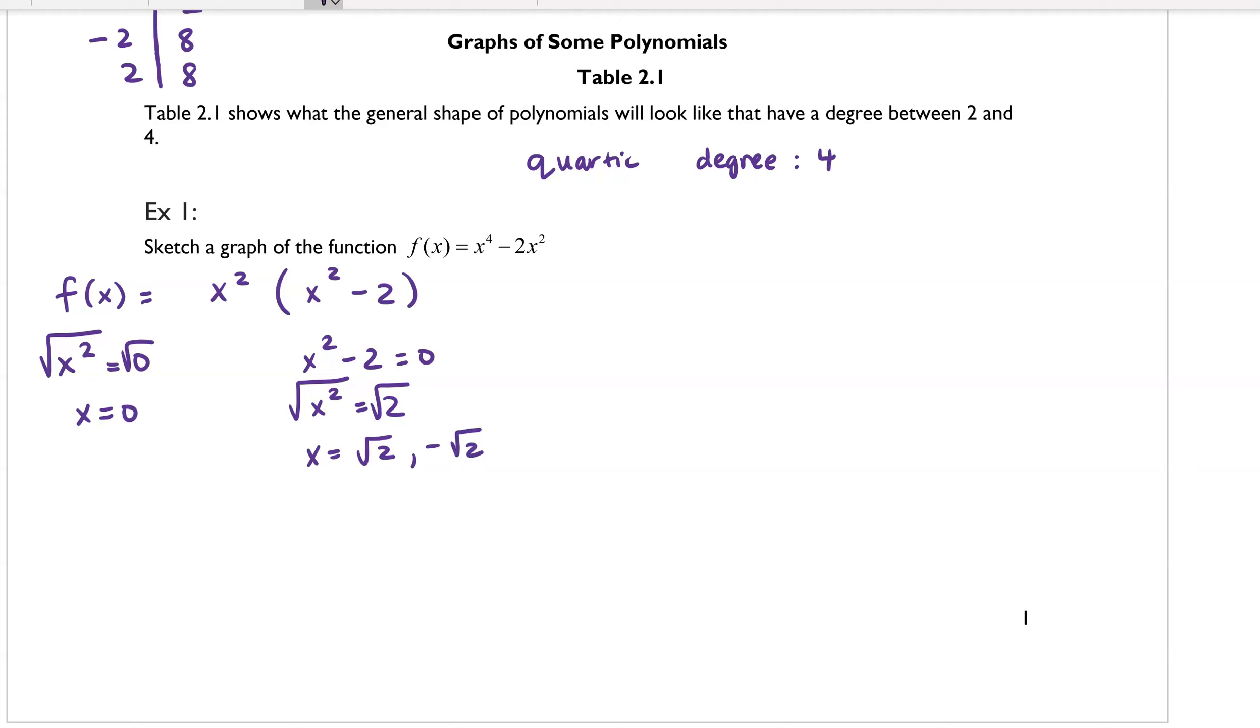So those are the roots or the zeros of our function. This is somewhere that students got a little bit confused on the first quiz. Our roots or zeros are just numeric values. Our x-intercepts, however, are ordered pairs. So if I wanted to list the x-intercepts, then they would be 0, 0, square root of 2, 0, and negative square root of 2, 0. So those would be our x-intercepts.